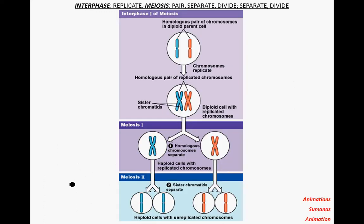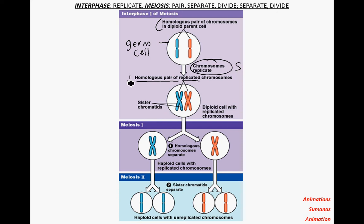Here's a more detailed view: a homologous pair of chromosomes exists in the germ cell, which will be signaled to undergo meiosis. The first thing that happens is all those chromosomes replicate in S phase, just as in the mitotic cycle. The interesting difference in the meiotic phase is that the homologous chromosomes actually pair up — a process called synapsis. The result of synapsis is a tetrad.